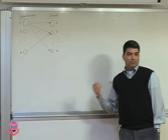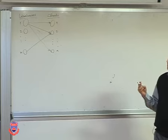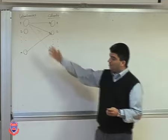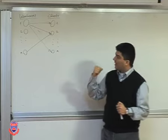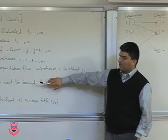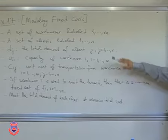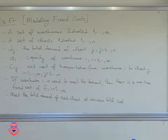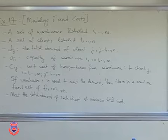This problem should look familiar — it's like a transportation problem, with supply points and demand points. Up to this point, everything is pretty much the same: each warehouse has a certain capacity, each client has a certain demand, there's a unit cost of transportation from each warehouse to each client. However, there's an additional condition: if I use warehouse i — meaning if I send anything from warehouse i — then there's a fixed cost that I need to pay as well.